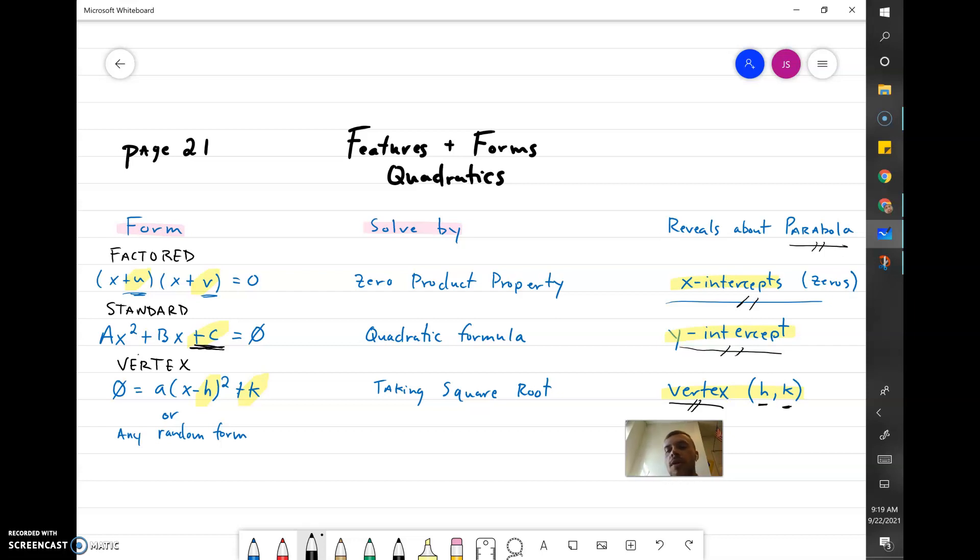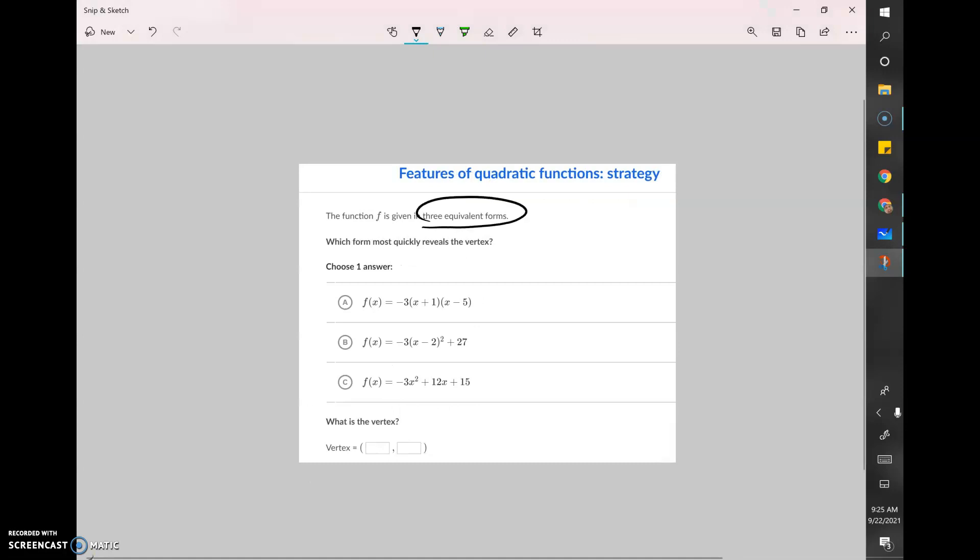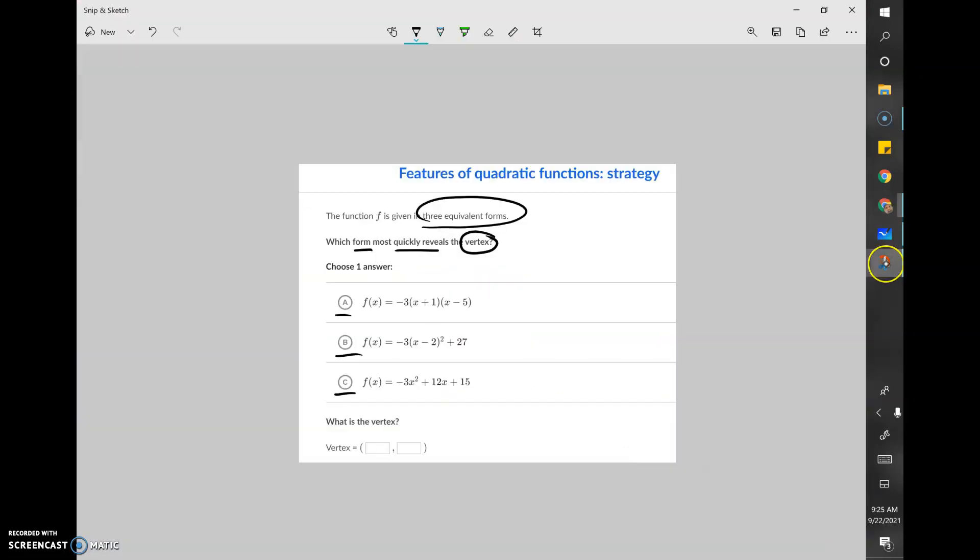Let's do some problems. Function f is given to us in three equivalent forms, so that means that if I were to graph a, b, and c in Desmos I would get the same exact parabola. We're looking for the form that quickly reveals the vertex. Going to my notes real quick. Vertex form: we've got a times x minus h squared plus k. So I'm looking for the one that looks like that.